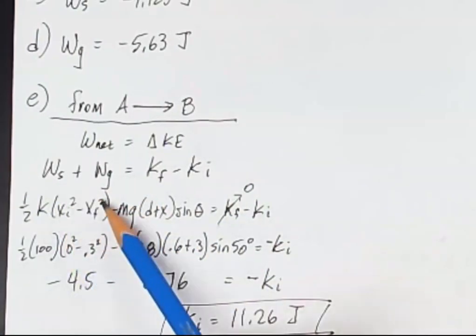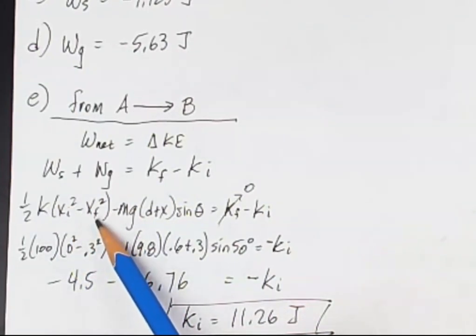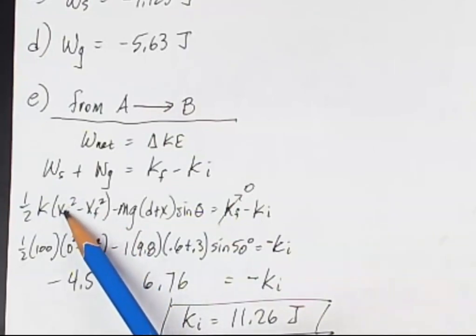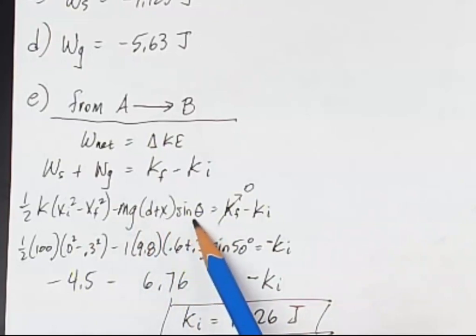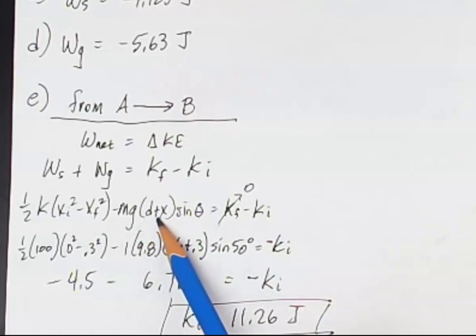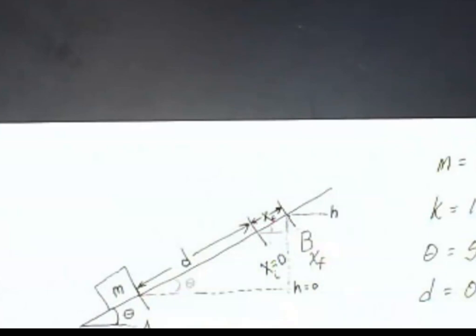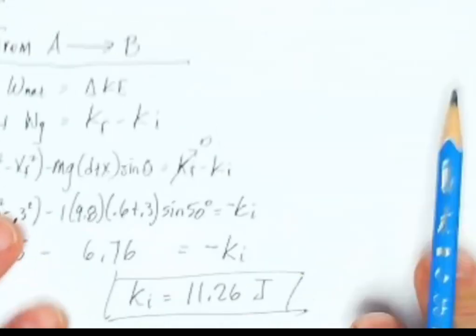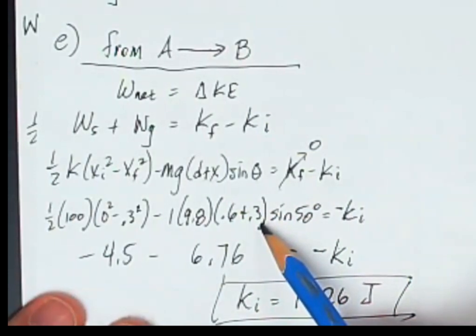So there's my work done by the spring over the compression. And they told us that the spring needs to compress 30 centimeters. So there it is. And before the block hits it, it's not compressed at all. Its initial compression is zero. Mass times G times H. Remember, H is the hypotenuse times the sine of the angle. So my hypotenuse of that entire thing is D plus XF. And that XF now is 30 centimeters.